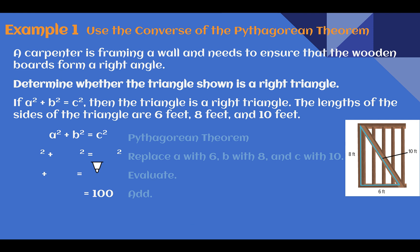Example 1: Use the Converse of the Pythagorean Theorem. A carpenter is framing a wall and needs to ensure that the wooden boards form a right angle. Determine whether the triangle shown is a right triangle. We'll use the Converse: if a squared plus b squared equals c squared, then the triangle is a right triangle. The lengths of our triangle are 6 feet, 8 feet, and 10 feet. Our legs were 6 and 8, and our hypotenuse was 10.